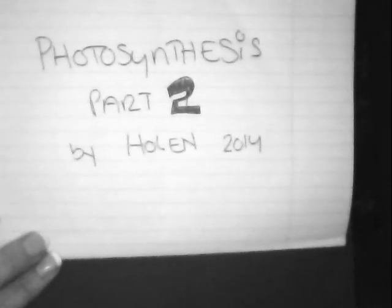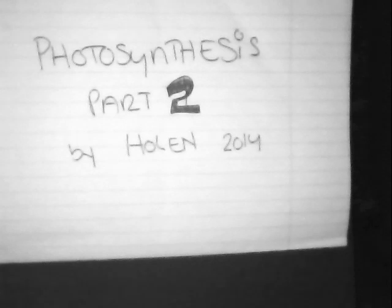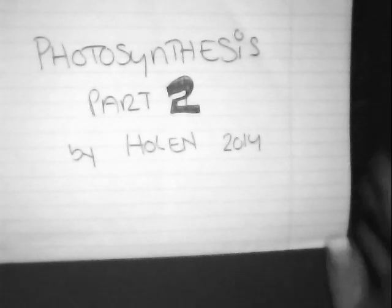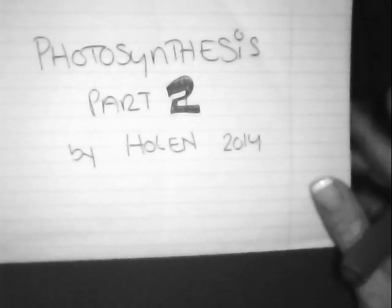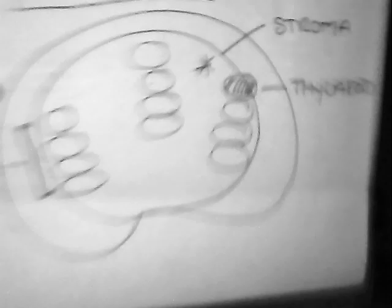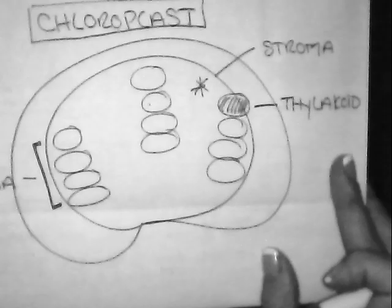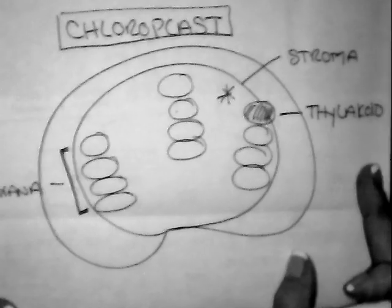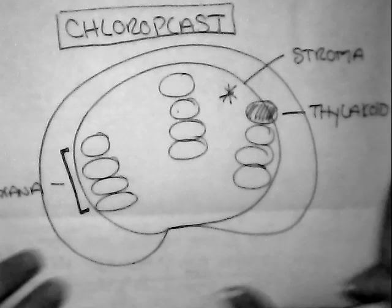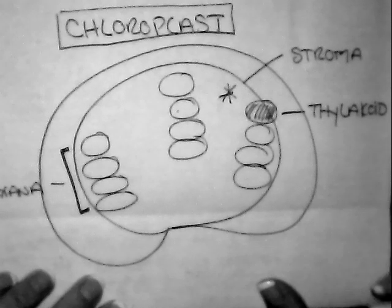Hey guys, this is Ms. Holen. This is our photosynthesis part two. Alright, so photosynthesis part one, we talked a lot about light. Now let's actually talk about where that light's going to go. So, one more time, we need to actually know our chloroplast at the back of our hands, so here he is.